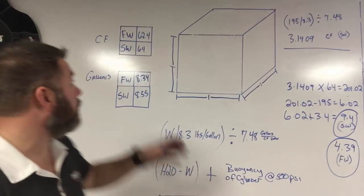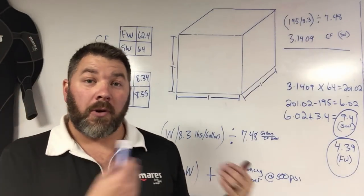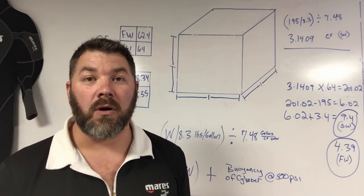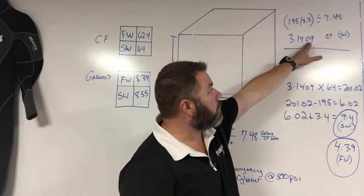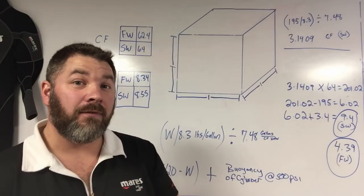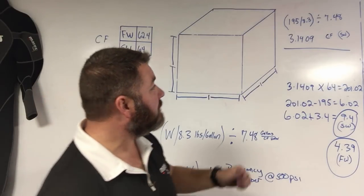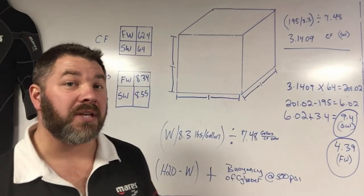Now here's where we have to determine, are we going to be in freshwater or saltwater? For the purpose of this video, we're going to be looking at saltwater first. So if I take the 3.1409 and times it by 64, which is how much a cubic foot of saltwater weighs, that comes in to 201.02 pounds.